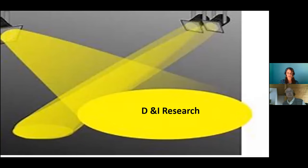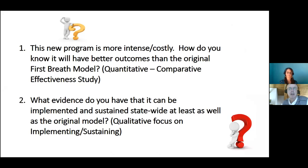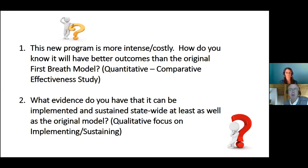Now I'll pass it over to Dr. Christensen to explain the application of CFIR to this work. I'm going to do a quick deep dive into CFIR to give you what was going on behind the scenes. We did D&I research during the redesign phase. Our funding sources challenged us with two questions: How do you know the more intense and costly model has better outcomes than the original First Breath? That's a quantitative comparative effectiveness question. But also: What evidence do you have that it can be implemented and sustained statewide as well as the original model? That's a more qualitative implementation focus.